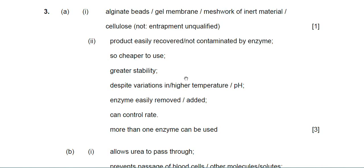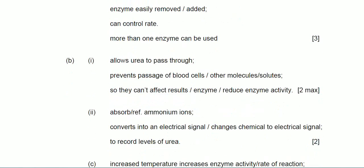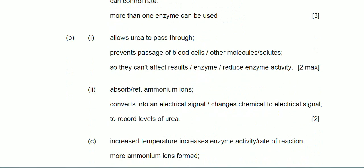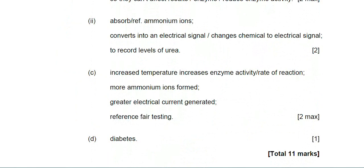There we've got the alginate beads for the immobilization. Part two about the advantages of immobilized enzymes. There they are. Again, that's not a complete list of advantages, but that's all that the examiner has placed in the mark scheme. Part B then, the function of the partially permeable membrane. There it is. Allows urea to pass through. Prevents the passage of any other molecules. Function of the transducer of course absorbs ammonium ions and converts into electrical signals. And part C then, about the differences in temperature, which I think I've already mentioned all of those. And lastly, the condition detected by biosensor is diabetes. That's the end of question three.